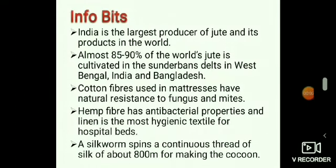India is the largest producer of jute and its products in the world. Almost 85–90% of the world's jute is cultivated in the Sundarbans Delta in West Bengal, India and Bangladesh. Cotton fibers used in mattresses have natural resistance to fungus and mites. Hemp fiber has antibacterial properties, and linen is the most hygienic textile for hospital beds. A silkworm spins a continuous thread of silk of about 800 meters for making the cocoon.